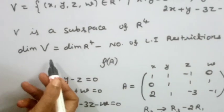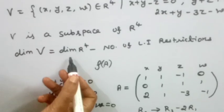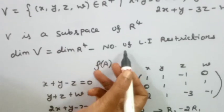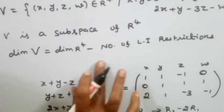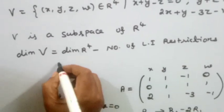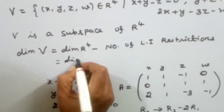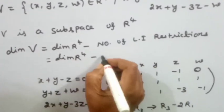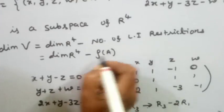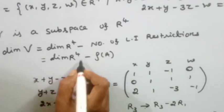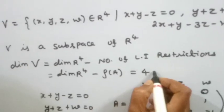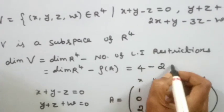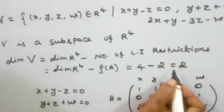Now we substitute into the dimension formula: dimension of V = dimension of R4 - rank of coefficient matrix A = 4 - 2 = 2. Therefore, the dimension of V is 2.